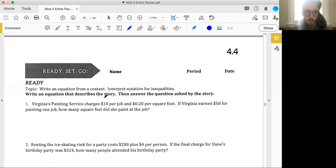We deal with word problems here. Virginia's painting service charges $10 per job and 20 cents per square foot. If Virginia earns $50 for painting one job, how many square feet did she paint at the job? We read it through once. I'm going to read it through again—it's a great problem-solving strategy. We have this painting service charging $10 per job, 20 cents per square foot. Virginia earned—and this is Virginia being a person, not the Virginia state—if Virginia earned $50 for painting one job, how many square feet did she paint at the job?